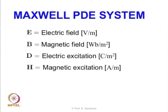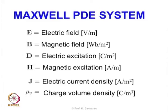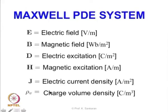D and H are the electric and magnetic excitation, and J and rho_V are the electric current density and charge volume density respectively, with their respective units. It is also interesting to look at all these quantities as densities of some fundamental quantities: the electric field is the line density of the voltage, the electric excitation is the surface density of the charge, the magnetic excitation is the line density of the current, and J and rho_V are current and charge volume densities.